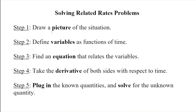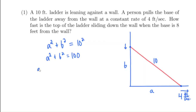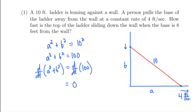So far we've drawn a picture, defined variables A and B as functions of time, and found our equation A² + B² = 100. Now we take the derivative of both sides with respect to time. The derivative of 100 is zero. For the left side, using the chain rule — similar to implicit differentiation — the derivative of A² is 2A · dA/dt, and the derivative of B² is 2B · dB/dt. So we get: 2A(dA/dt) + 2B(dB/dt) = 0.